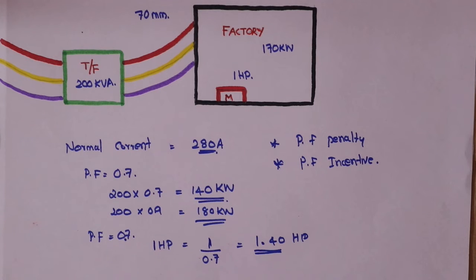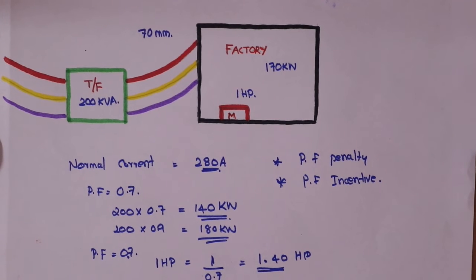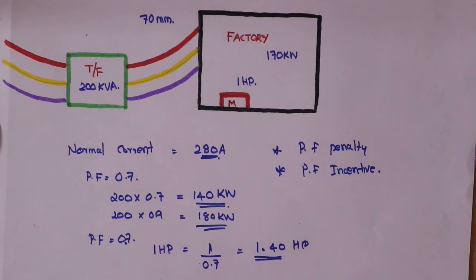So, in my case, my power factor is 0.70. That is a penalty. My total penalty is around 10.5%. This is the percentage of power factor penalty. For the amount of money spent, there is also a percentage of Power Factor Incentive available.